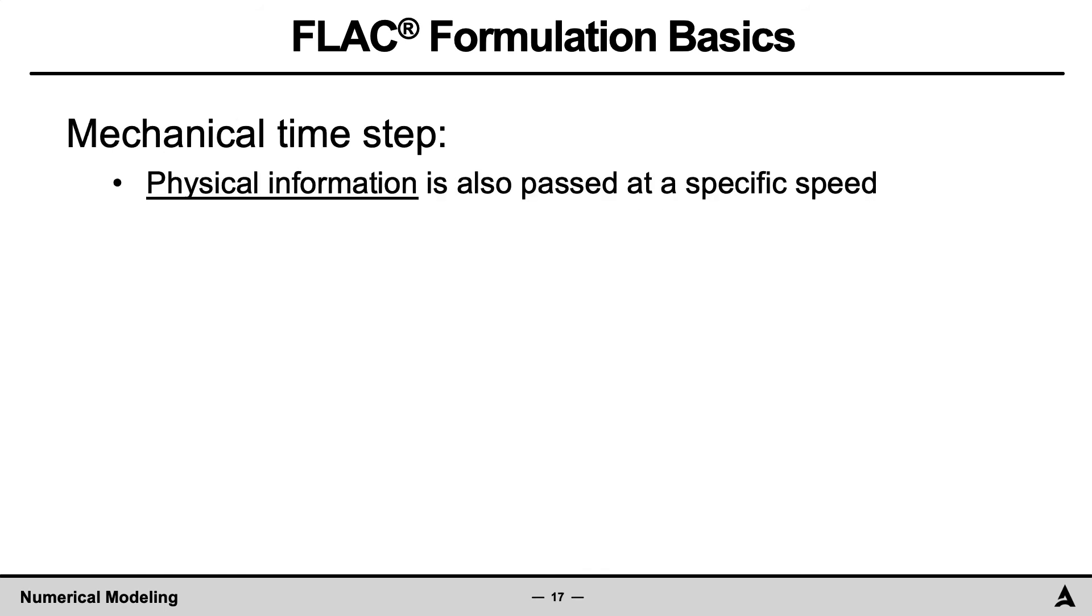Another important consideration is the value of the time step so the solution is accurate. In thinking about this, it is important to know that physical information is passed at a specific speed. For example, consider the column of material with a velocity pulse at the bottom. This pulse will propagate upward through the material at the P wave velocity, Vp.